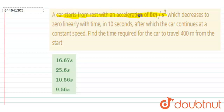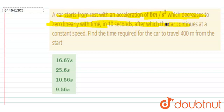Hello everyone. A car starts from rest with an acceleration of 6 meters per second squared, which decreases to zero linearly with time in 10 seconds. After which, the car continues with constant speed. Find the time required for the car to travel 400 meters from the start.